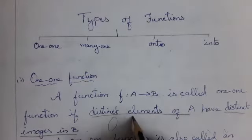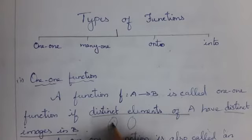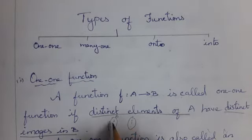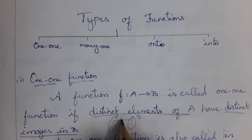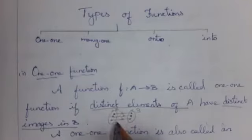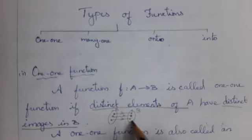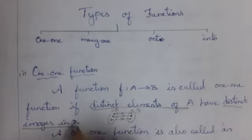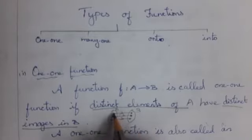Take two sets — here three elements, here four elements. For every element in the first set, from A to B, you have an image separately. That is, for every element in A, you have one image in B. Distinct elements of A have distinct images in B.